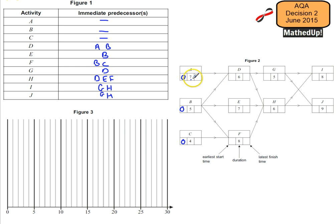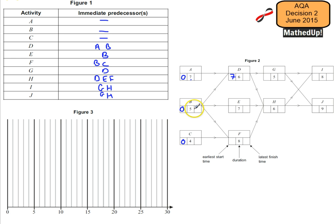D can start after 7 minutes or after 5 minutes, so it needs A and B to be completed first. So it needs to start after 7 minutes - both A and B would be completed after 7 minutes. For E to start, B needs to be completed, so that's after 5 minutes. For F to start, both B and C need to be completed, so it starts after 5 minutes.